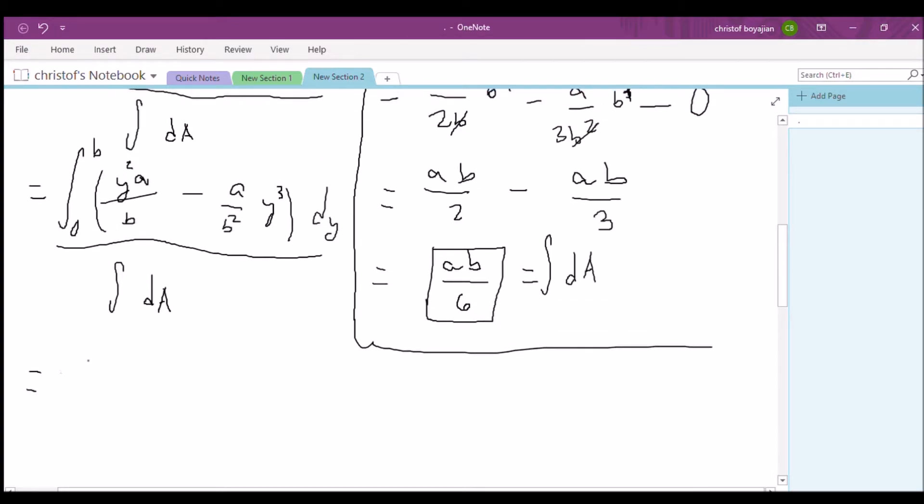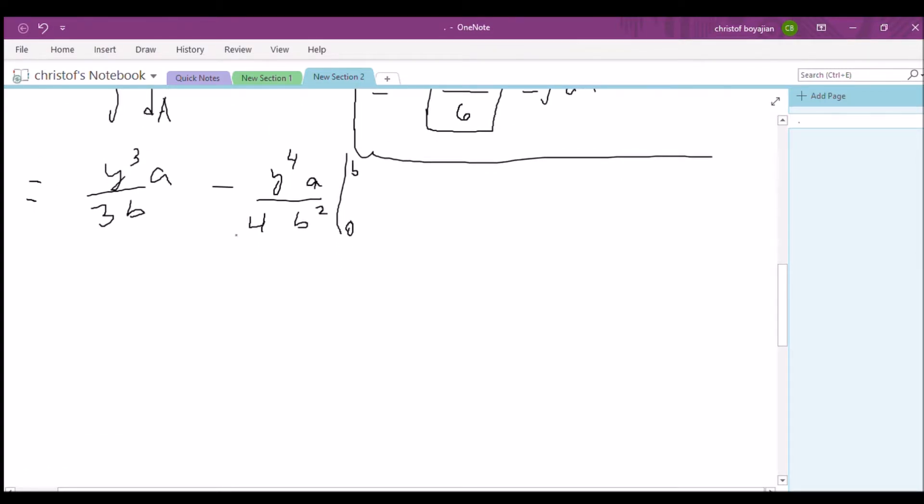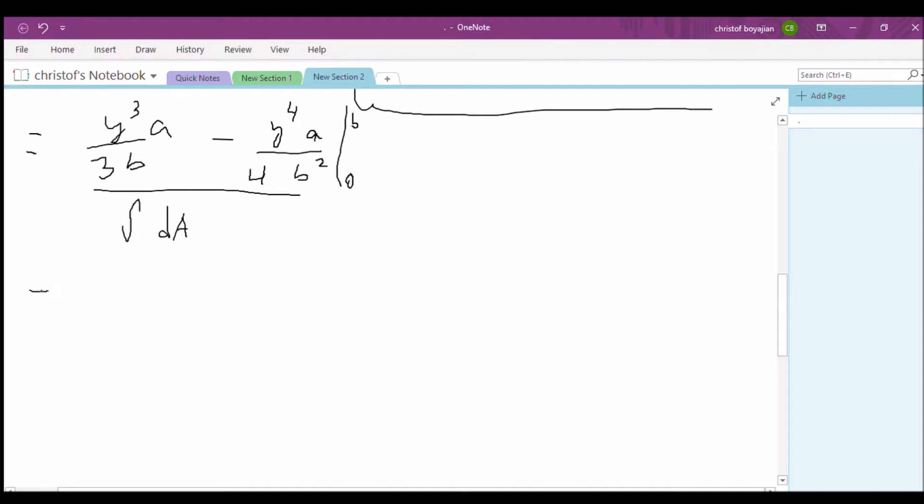So with respect to y we should get y cubed times a over 3b minus y to the fourth times a over 4b squared evaluated from 0 to b. Okay, let's go ahead and plug these values in and let's not forget about this portion on the bottom. All right, so plugging in b for y we get b cubed times a over 3b minus b to the fourth times a over 4b squared over the integral of our dA's.